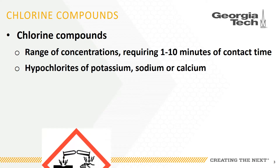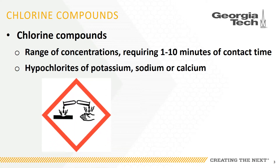The pictogram of the test tubes being poured on a hand and surface represents corrosion. This signifies that the chemical may cause eye damage, break down the skin, or cause burns, and it may be damaging to certain metals.